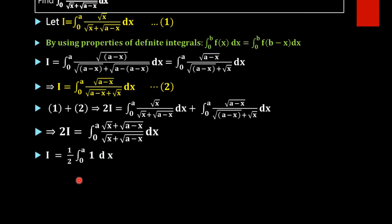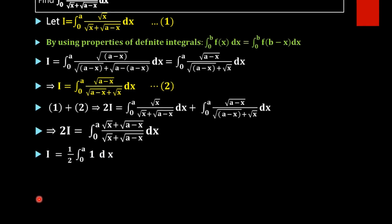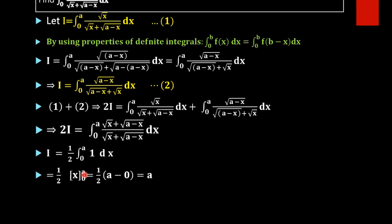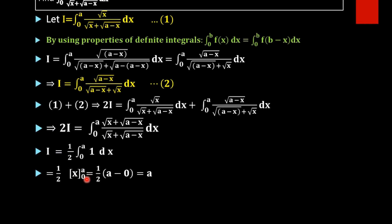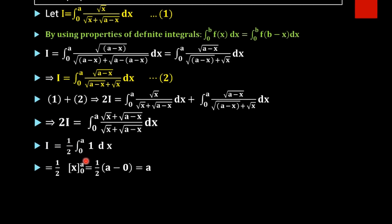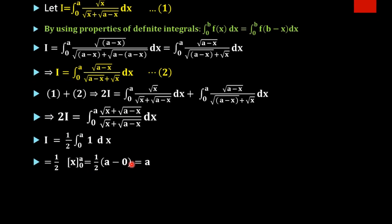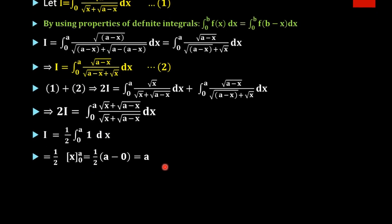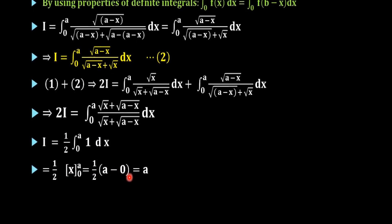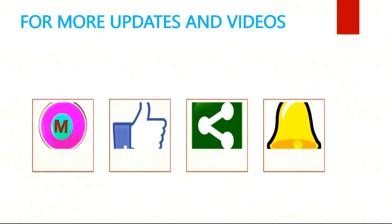After cancellation, we get 2i equal to integral 0 to a of 1 dx. The integral of 1 is x, so 2i equals half of x from 0 to a. Applying the limits, that is half of (a minus 0), which equals a over 2. Therefore i equals a over 2.